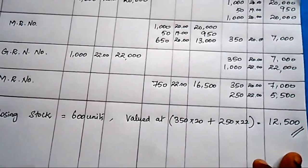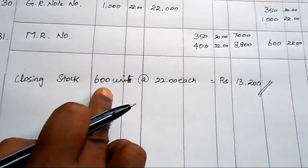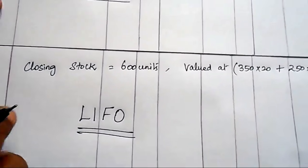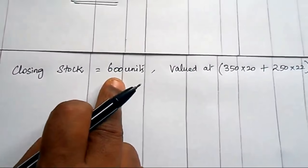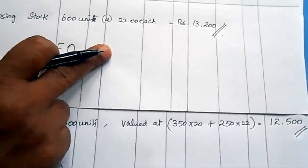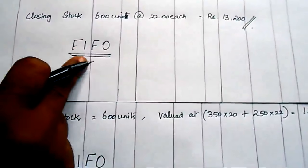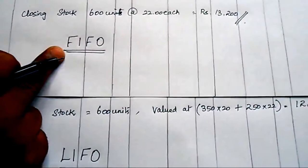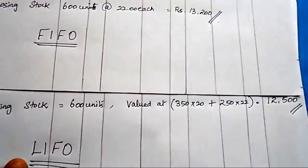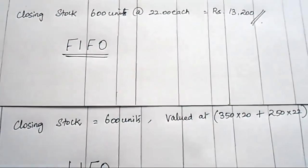Now we can compare FIFO and LIFO. According to the FIFO method, closing stock is 600 units at ₹22 each = ₹13,200. According to the LIFO method, closing stock is 600 units valued at ₹12,500. That is the difference between FIFO (First In, First Out — issue from the earliest lot) and LIFO (Last In, First Out — issue from the last lot). Hope you could understand the FIFO and LIFO methods from this video. Thank you.